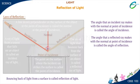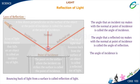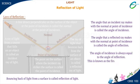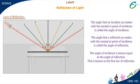Do you see any relation between the angle of incidence and the angle of reflection? The angle of incidence is always equal to the angle of reflection. This is known as the first law of reflection. This can be proved by measuring various angles of incidence and angles of reflection with the help of a protractor.